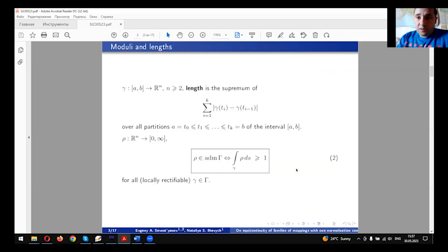Recall some definitions related to the so-called models, models of families of paths. A path is a continuous mapping of a segment or open or half-open interval in R^n. The length of a path gamma is defined as a supremum of such sums over all partitions by points.